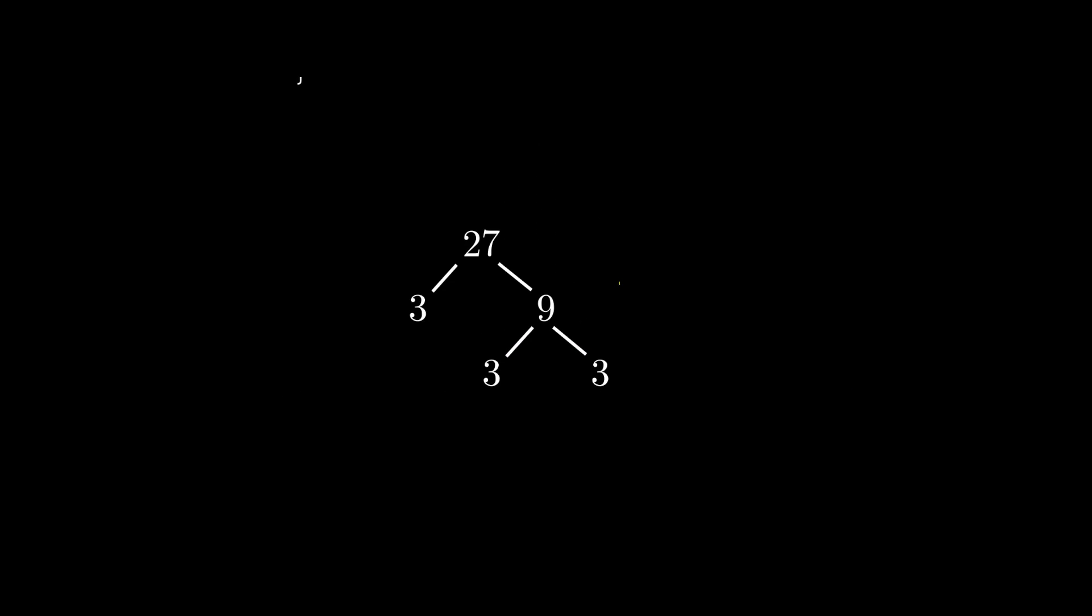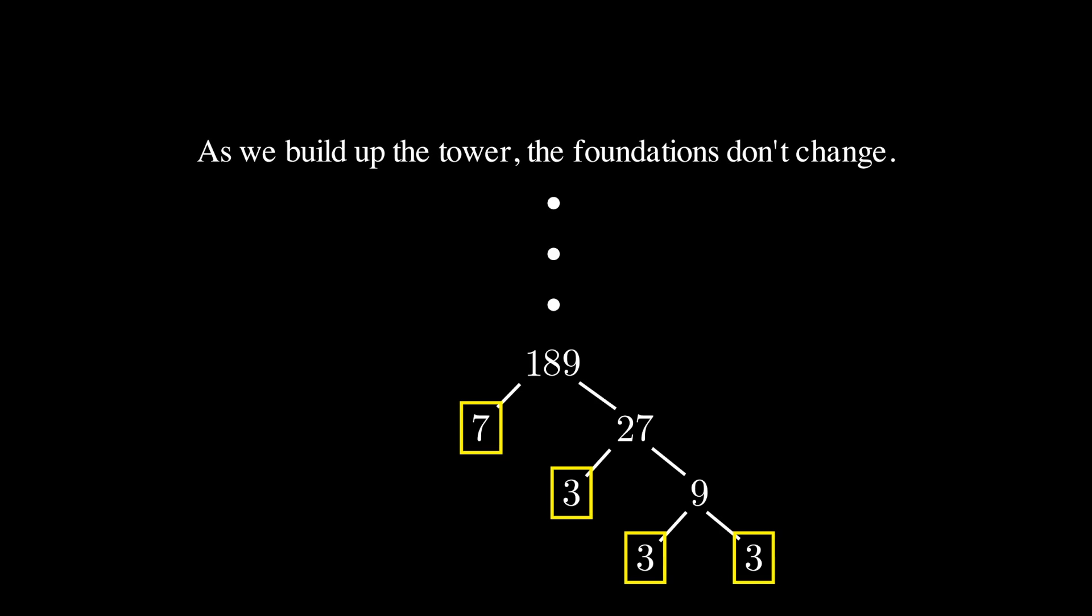This tower of factors can be built on by adding to the top. When you do this, the foundations of the tower remain the same. You simply add more numbers on top. With these two facts, that the prime numbers are the foundations of the tower, and that we can add to the tower without changing its basis, we can prove that every integer is built from these numbers.